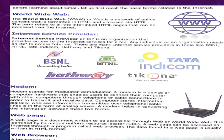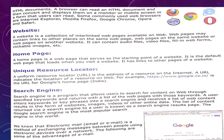Before we create an email account in Gmail and go ahead with sending, receiving, and attaching mail, we need to know a few basic terms so that it will be helpful for you to understand this topic. Today we will look at these terms. I am going to explain them in the form of a chart. These topics are: World Wide Web, Internet Service Provider, modem, web page, web browser, website, home page, Uniform Resource Locator, and search engine. We will discuss each term one by one.